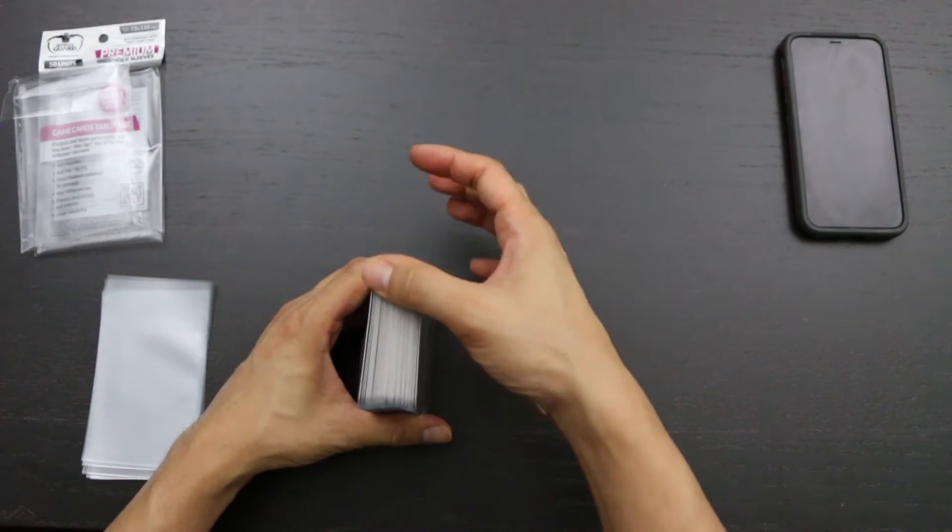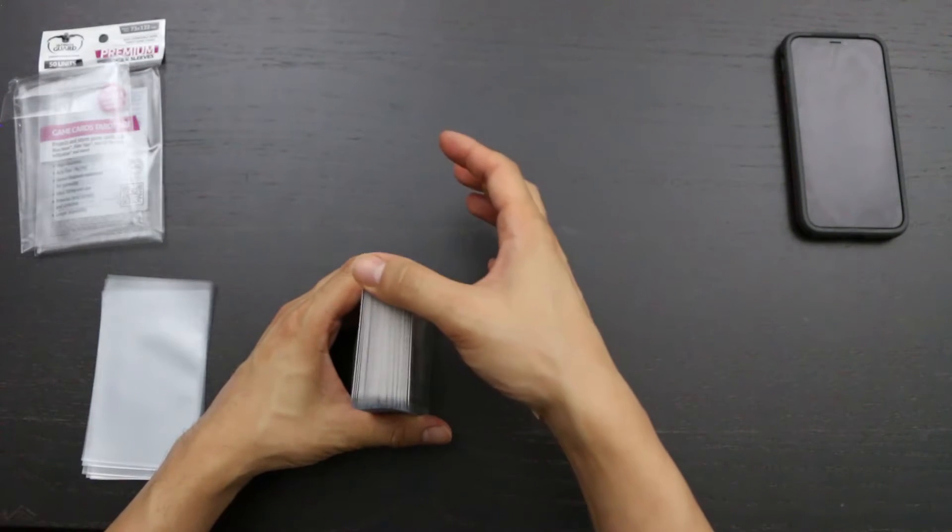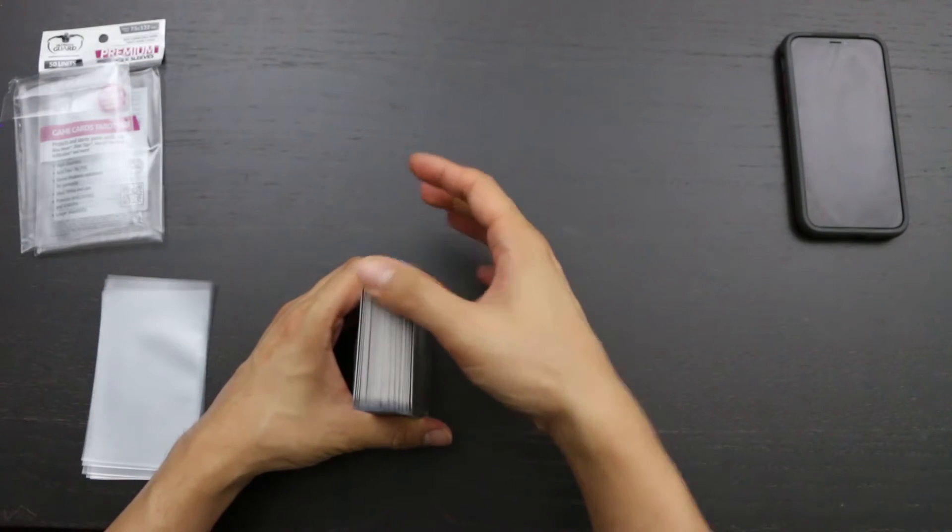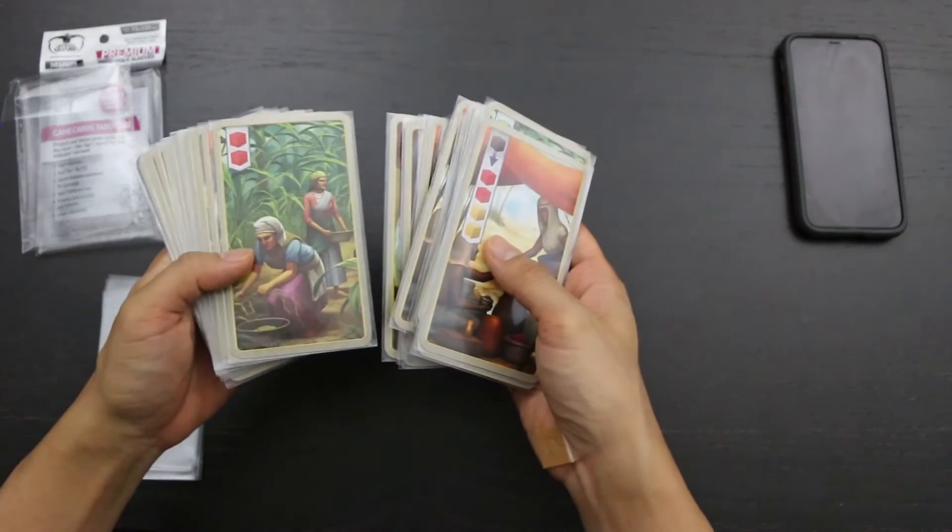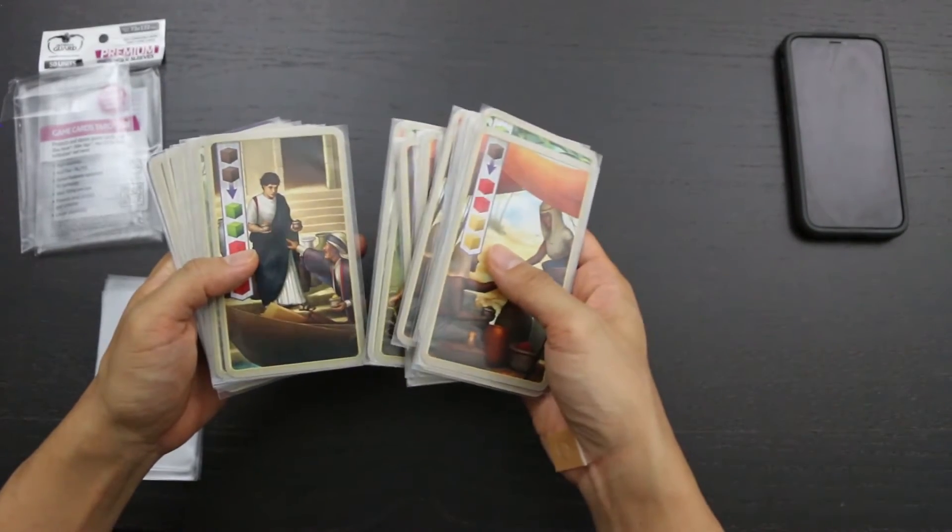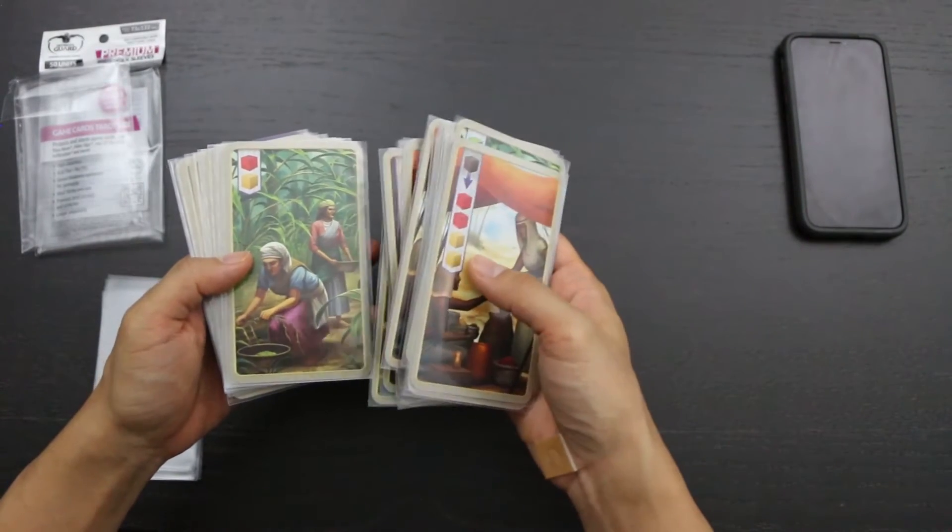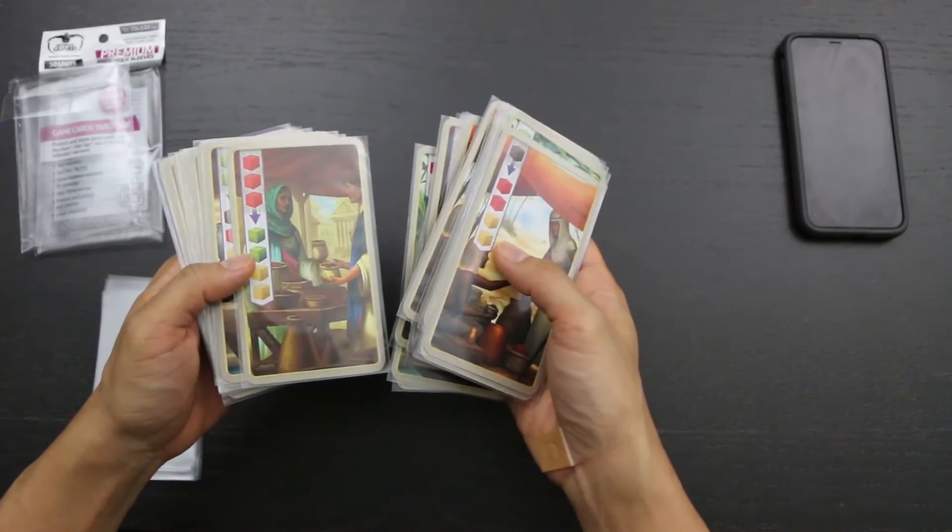The tops are perfectly uniform. There is no difference that I can discern from rubbing my hand across the top. There is just a little bit of a worry because of some of the sleeves have it coming out of the package with creases or dents in them, but it is not a lot.